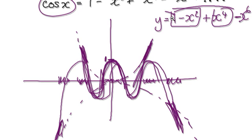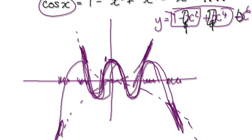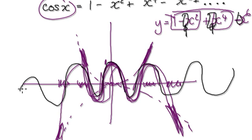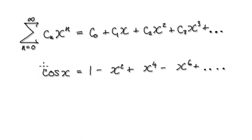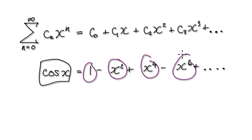Don't forget, you still need to find the appropriate coefficients — coefficients for each term. But you can see that by adding all these x squared, x to the power 4, x to the power 6, and so on terms, you can create your cos graph. The point is that you can express cos as a sum of all these terms.